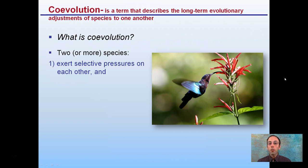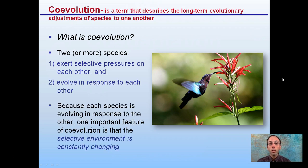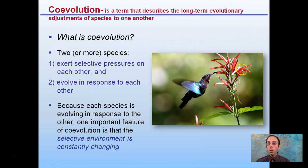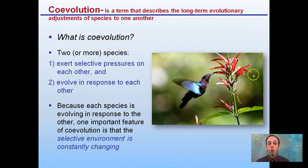Co-evolution is a term that describes the long-term evolutionary adjustments of species to one another. It involves two or more species that exert selective pressures on each other and evolve in response to each other. We see an example here where these flowers have a very small diameter and are very long, which matches up perfectly with the hummingbird's long beak. A bee would not be a great pollinator for this, but this flower is designing its structures to particularly match that of the hummingbird.